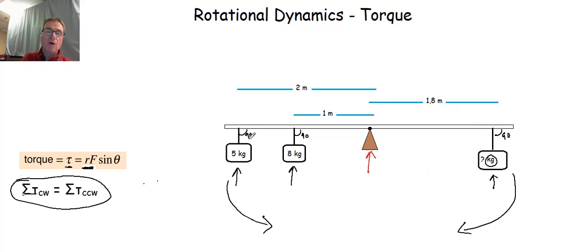Also, all of these masses or all of these weights are being applied at 90 degrees to the seesaw board itself. So we can eliminate the sine theta there because the sine theta, sine of 90 degrees is 1 in each one of these cases. So we don't have to include the sine theta in our formulas.